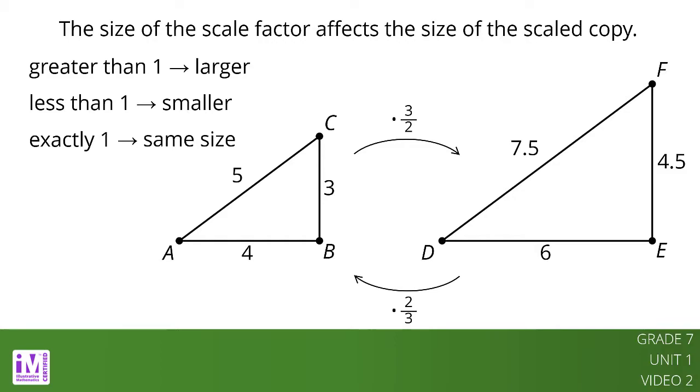This means that triangles ABC and DEF are scaled copies of each other. It also shows that scaling can be reversed using reciprocal scale factors, such as 2 thirds and 3 halves. Dividing 1 by a number gives the reciprocal of that number.